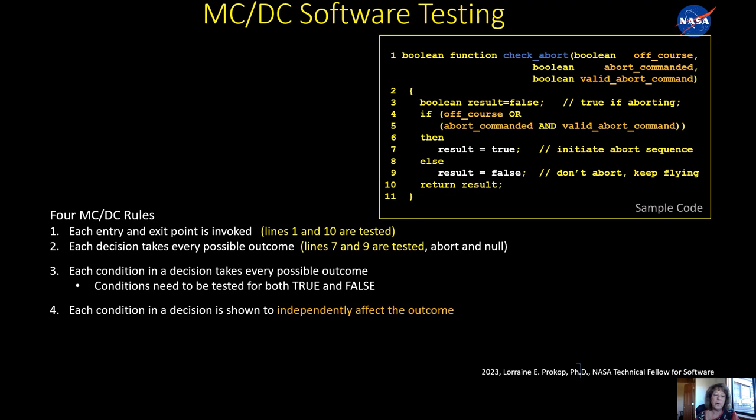What that means is that each of the conditions have to be tested to have a value of true and false. And fourth, each condition in a decision is shown to independently affect the outcome. Now, this is the one that causes most difficulty in understanding. What you're doing here is testing each condition in a decision only when it matters or only when it actually affects the result of the decision. And I'm going to go through this by way of example.